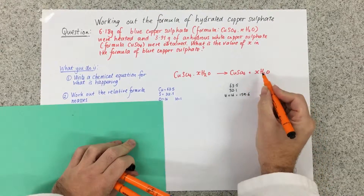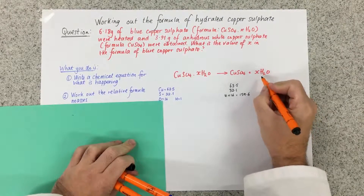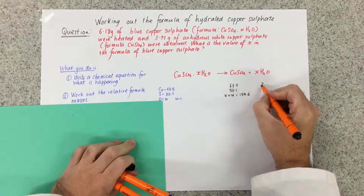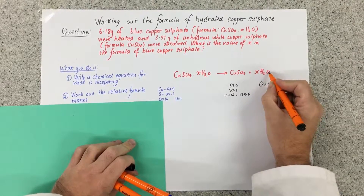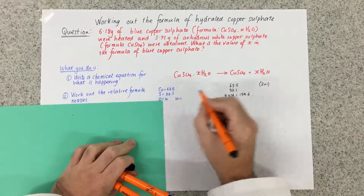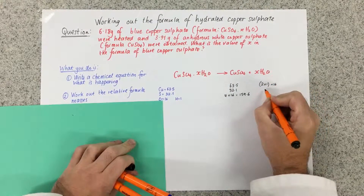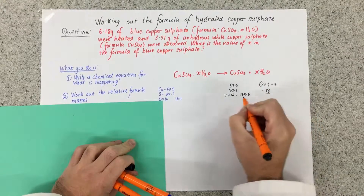The relative formula mass of water is two hydrogens, which is two times one, plus oxygen, which is 16. So the relative formula mass of water is 18.